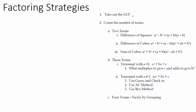Greatest common factor, difference of squares, difference of cubes, sum of cubes, factoring a trinomial with a coefficient of 1 on the x squared, factoring a trinomial with a coefficient other than 1 on the x squared, and factor by grouping. What I have here is sort of a checklist that you want to go through in your mind when approaching a problem. Let's look at a problem and apply this checklist and see if it can help us factor.